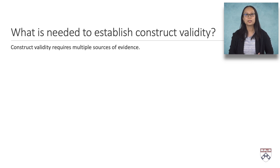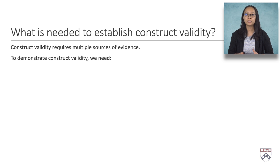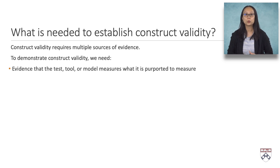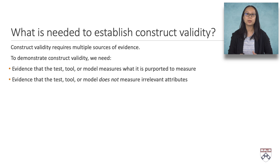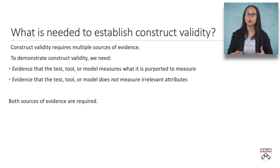An important question is: what is needed to establish construct validity? In practice, construct validity requires multiple sources of evidence, which can be categorized into two main buckets. We need evidence that the test, tool, or model measures what it is intended to measure, and evidence that it does not measure irrelevant attributes — such as the complex reading passages from the previous example. Importantly, both sources of evidence are required. It is not sufficient to just establish that the test measures what it is supposed to measure; we also have to illustrate that it omits features deemed irrelevant to the topic at hand.